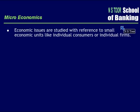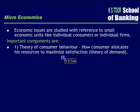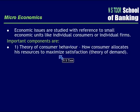What are the important components of microeconomics? The first important component is the theory of consumer behavior — how the consumer allocates resources with a view to maximize satisfaction. This is also called the theory of demand.